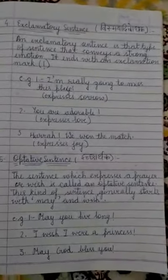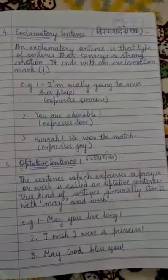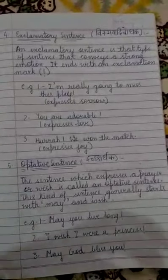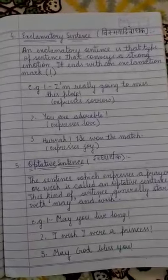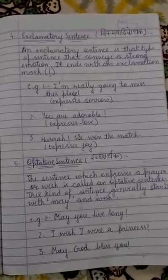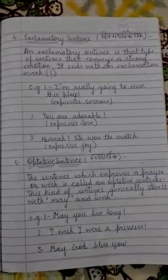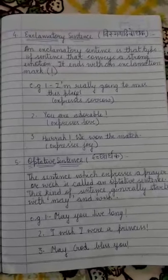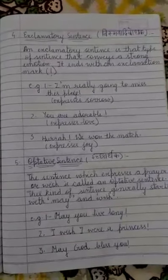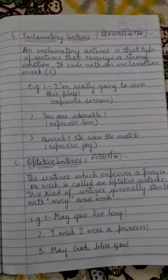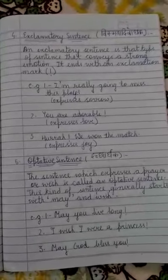Now we will discuss about exclamatory sentences. An exclamatory sentence is that type of sentence that conveys a strong emotion — whether it is happiness, sorrow, frustration, or anger. These sentences end with an exclamation mark. For example: 'I am really going to miss this place' — expressing sorrow. 'You are adorable' — expressing love and admiration. 'Hurrah, we won the match!' — expressing joy and happiness. All are exclamatory sentences.